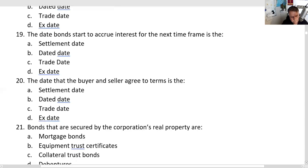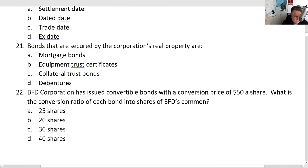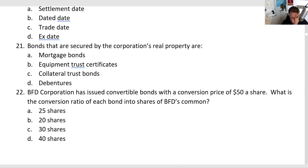Bonds secured by real property are mortgage bonds — answer A. Equipment trust certificates would have been B (secured by major movable equipment, popular with airlines). Collateral trust bonds would be C (secured by marketable securities placed in escrow). Debentures would be D (full faith and credit of the issuer with no specific collateral). The answer is A — mortgage bonds are secured by real property.